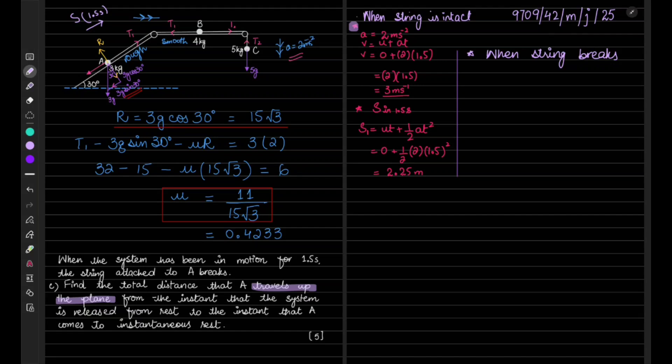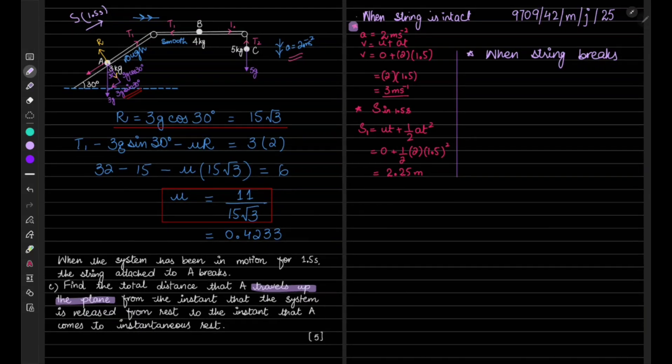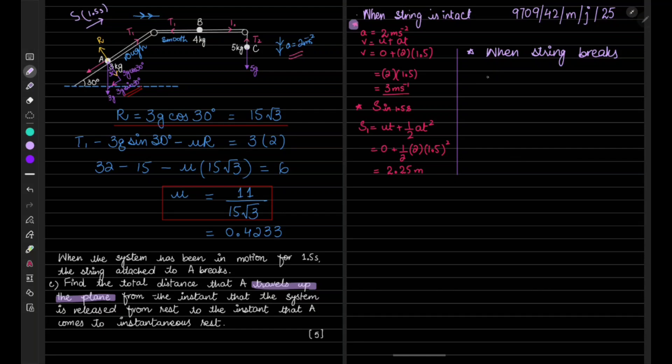And for that, because to find the distance we must first know with which acceleration it will be moving. Because now when the string breaks, the acceleration is now different than before. So for that we will be using forward minus backward equals ma.